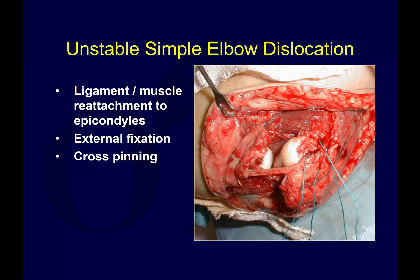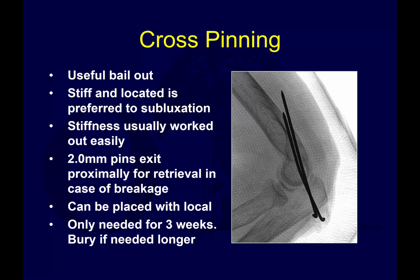In this particular case of a simple elbow dislocation — no fractures — there is going to be a repair of the lateral ulnar collateral ligament, as well as likely a muscle repair posteriorly, and your ligament repair. You may have to consider external fixation to neutralize your repair, or even cross-pinning as a bailout if necessary. It's always better to have a stiff and reduced elbow than a subluxed elbow you have to deal with later. Stiffness can be worked out with rehab or a release, but a persistently subluxed or dislocated elbow is very difficult to reconstruct.